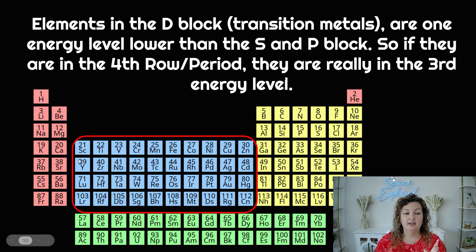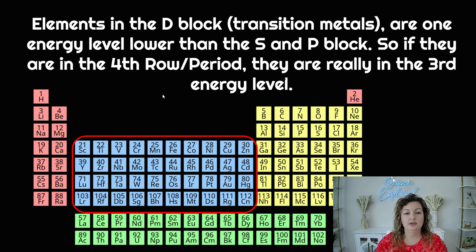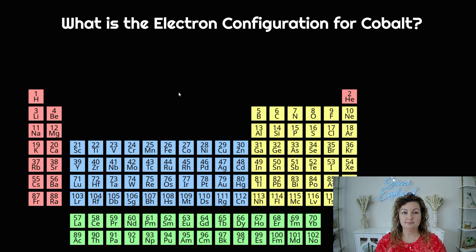So this is three. And this really should be five, but we're gonna minus one and say it's four. So we're gonna try one — what is the electron configuration for cobalt?